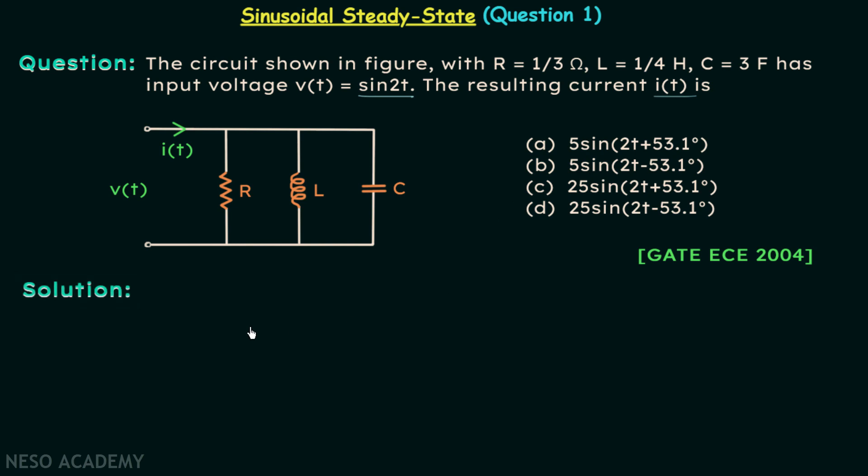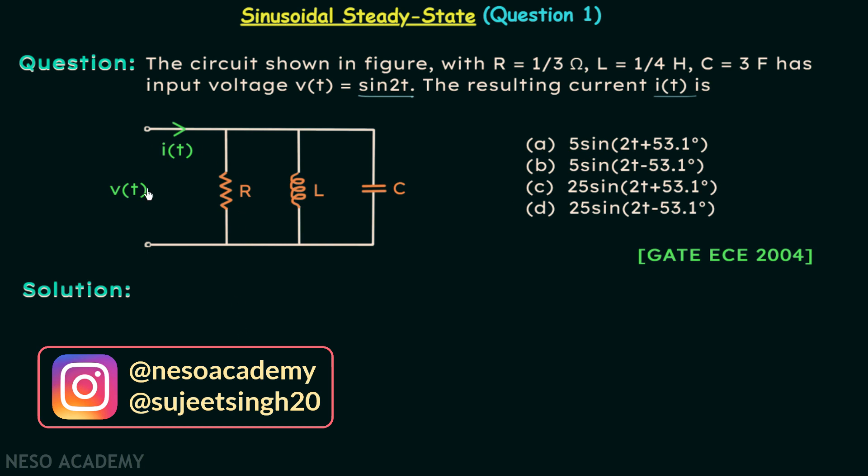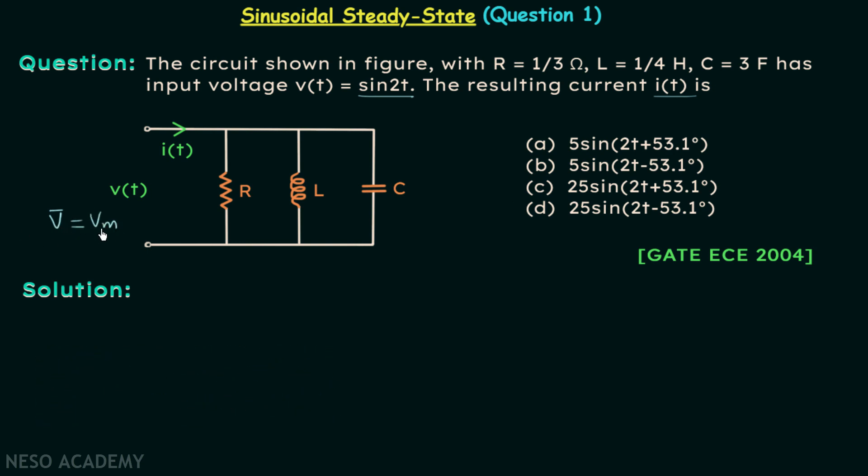Now we will move on to the solution in which we will understand how we can calculate current I(t). Step number 1 is to have this circuit in the frequency domain, and we know in place of V(t) we will have V phasor.